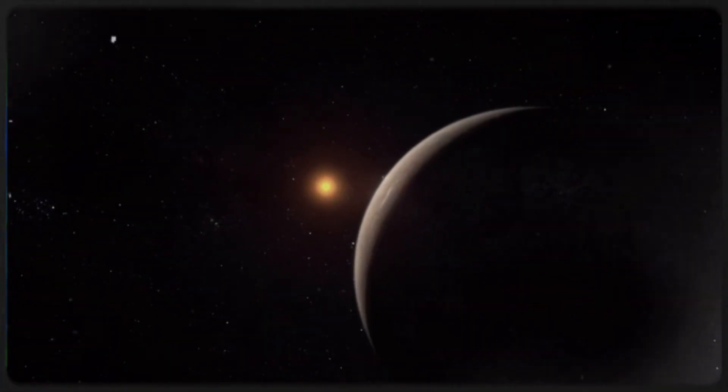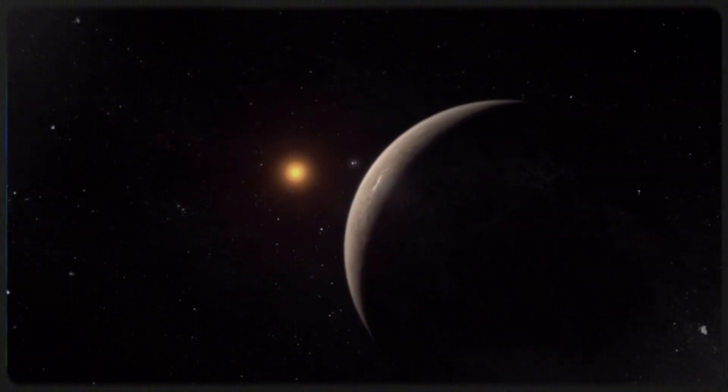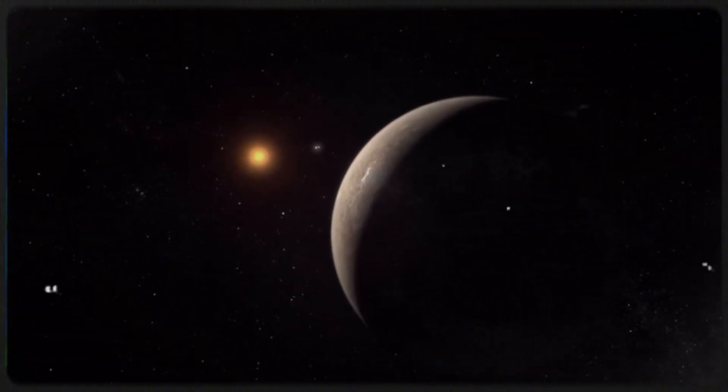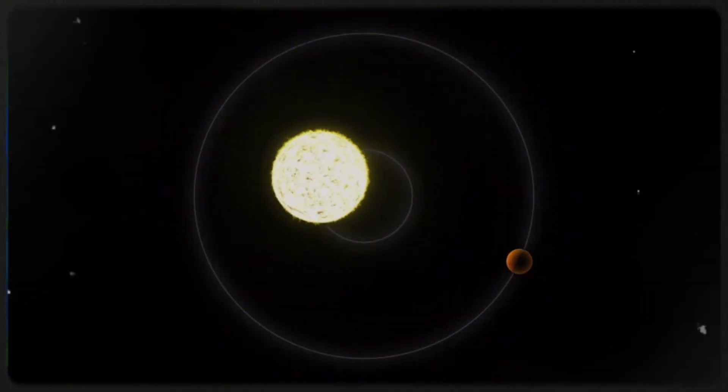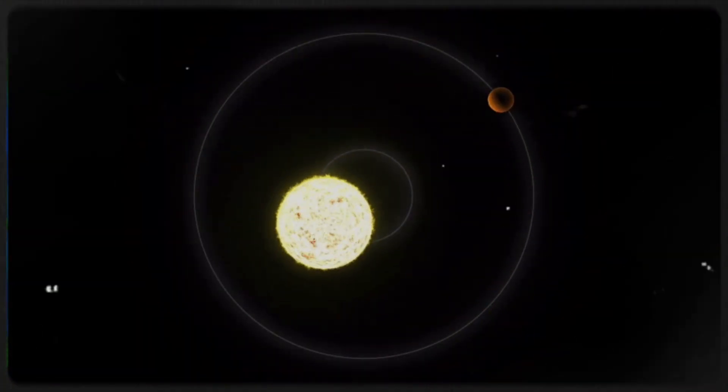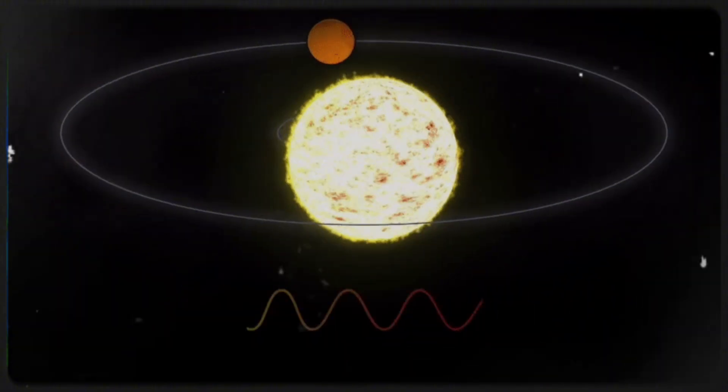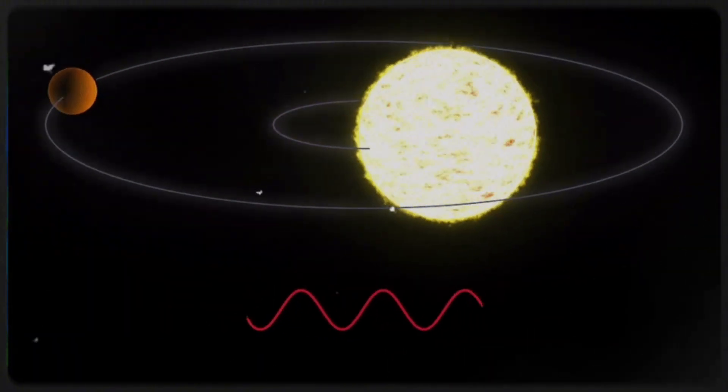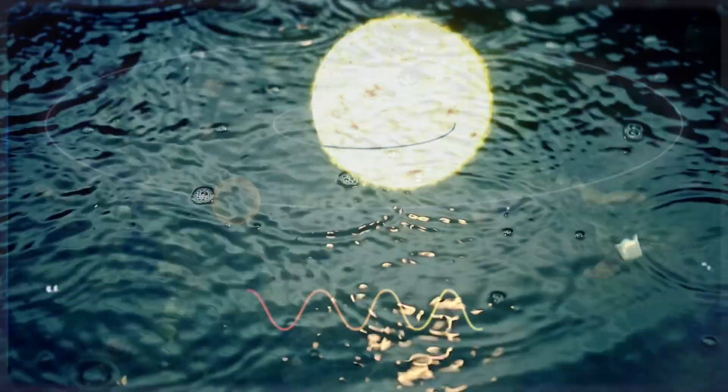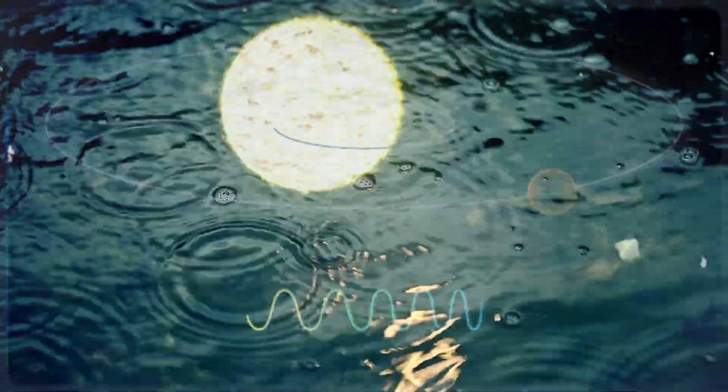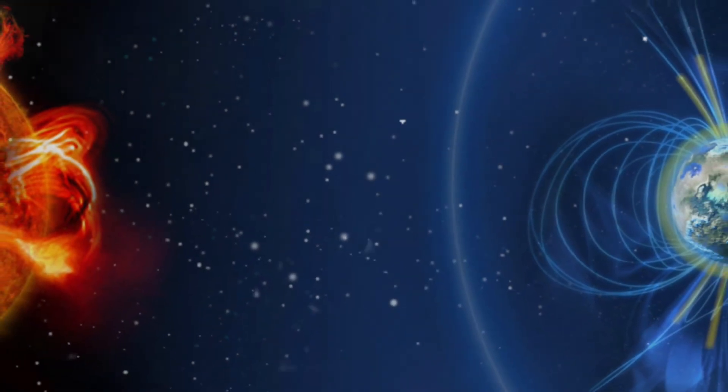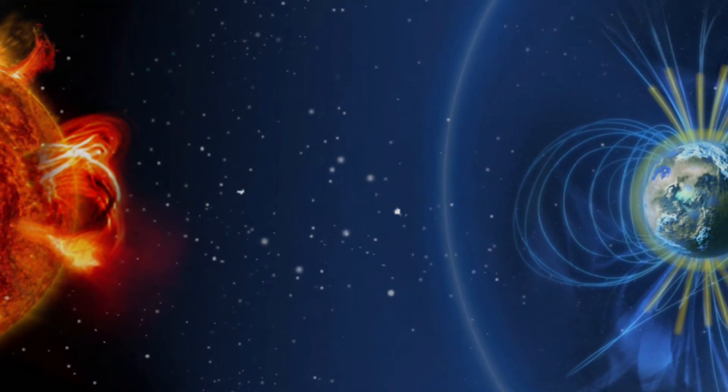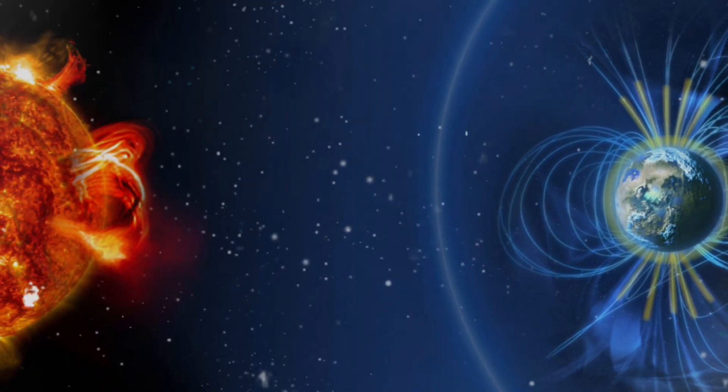Because Proxima b is so close to its star, it is bombarded by solar wind and charged particles at a rate far higher than Earth experiences. Over time, this relentless exposure may have stripped away its atmosphere, leaving the planet barren and exposed to the vacuum of space. If this is the case, Proxima b would be unable to support liquid water on its surface, significantly reducing the likelihood of life as we know it. However, some scientists remain hopeful that a magnetic field similar to Earth's could provide some protection, preventing complete atmospheric loss.